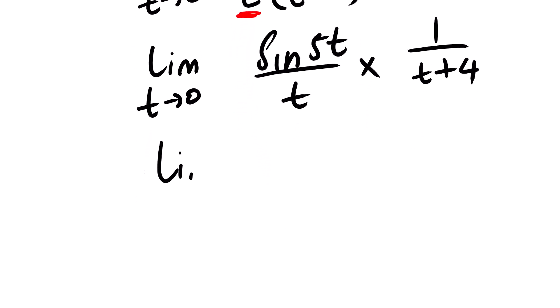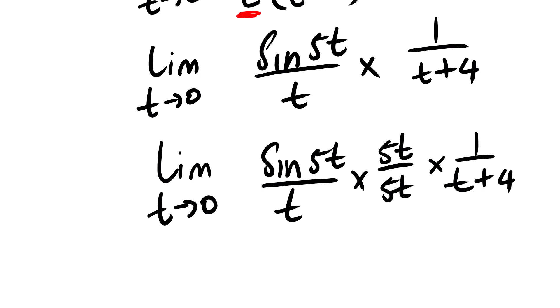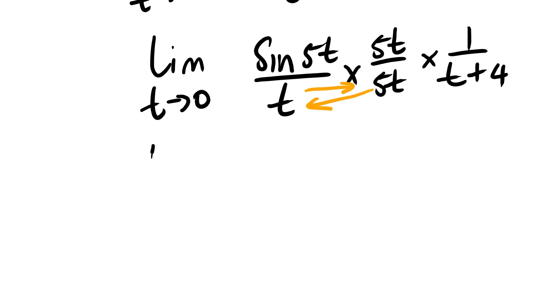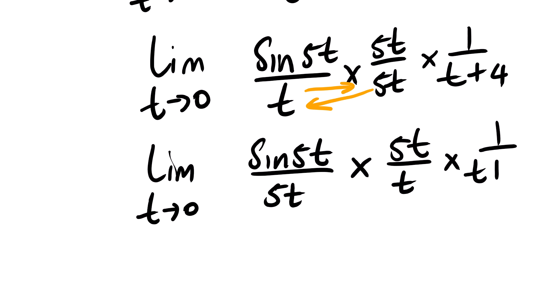From here, we can express 1 in terms of 5t. Since 5t over 5t is the same as 1, we multiply by 5t over 5t — we haven't changed anything. So we have sin 5t over t, multiplied by 1 over t plus 4, multiplied by 5t over 5t. Interchanging positions, we get sin 5t divided by 5t, multiplied by 5t over t, multiplied by 1 over t plus 4.